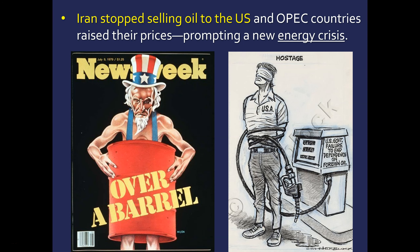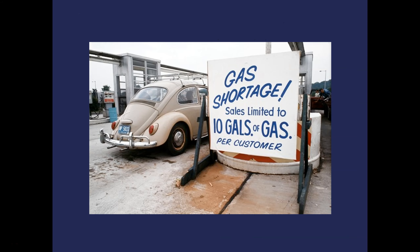Other OPEC countries — the Organization of Petroleum Exporting Countries, essentially the oil-rich countries working together to set the price of oil — also began raising their prices. This prompted yet another energy crisis. Americans were fed up. Gas shortages spread across the country. This was twice in a decade with the same situation: oil at a shortage, gas prices going up, people afraid they can't fill up their cars, and the economy beginning to falter.